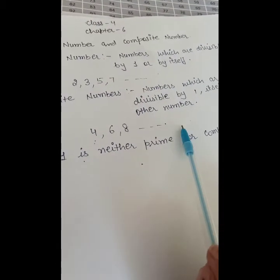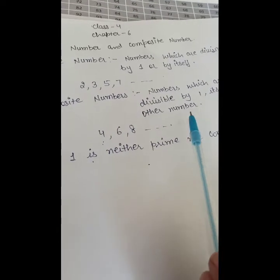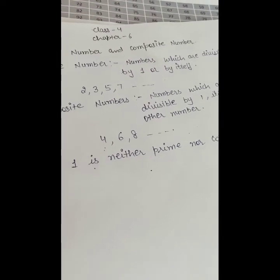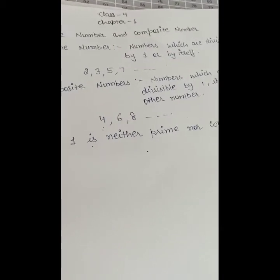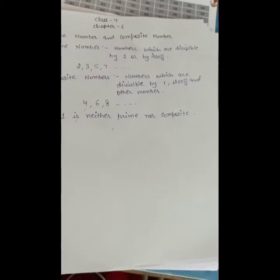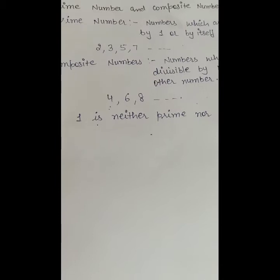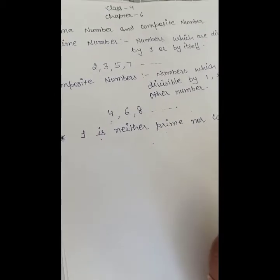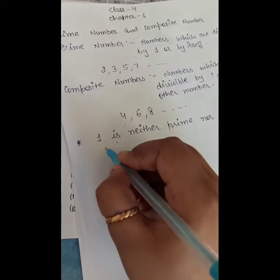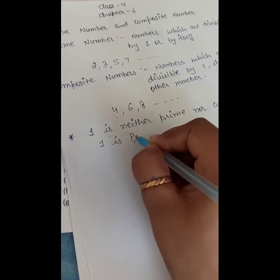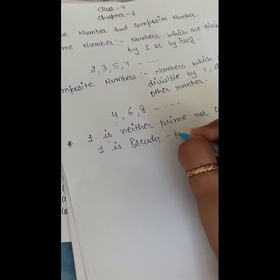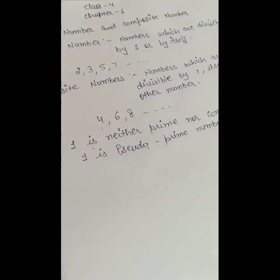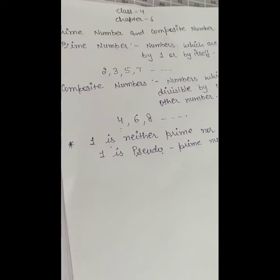Composite numbers are those which have more than two factors. And what do you mean by factors? Factors are the numbers which completely divide the given number. So one is neither prime nor composite — it means one has only one factor. So what do we call one? One is a pseudo prime number, because one has only one factor and it is neither prime nor composite.